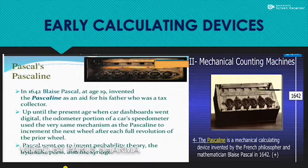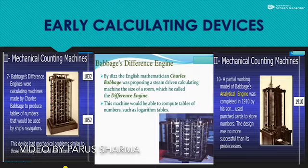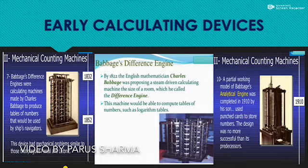Then we have Charles Babbage's Difference Engine and Analytic Engine. In 1822, he made the Difference Engine for calculations, but it had the same mechanical problems as the Pascaline or Step Reckoner — it could perform only four mathematical calculations: addition, subtraction, multiplication, and division.